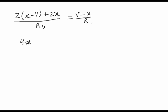Let's calculate the value of X. This equation would give us 2X minus V plus 2X upon R0 equals V minus X upon R.